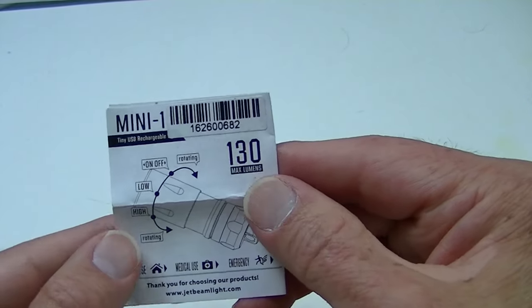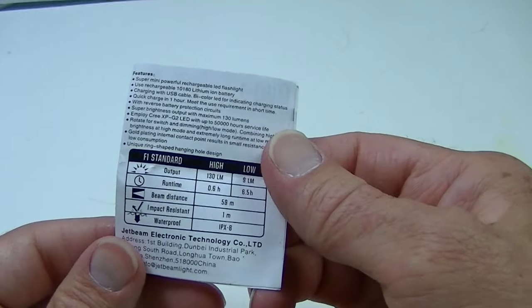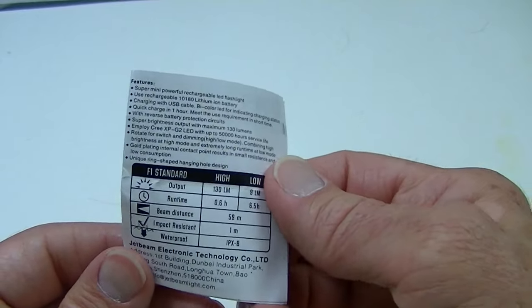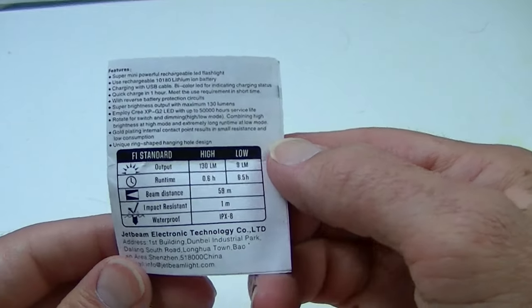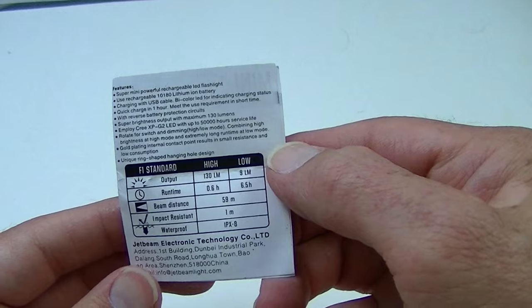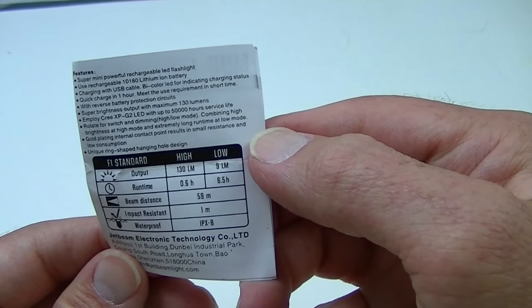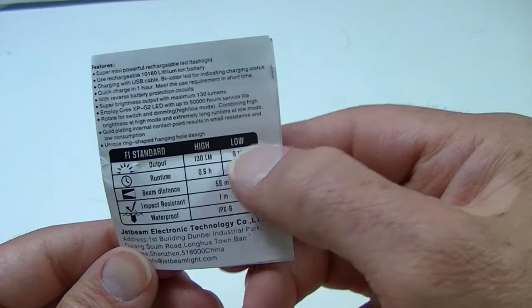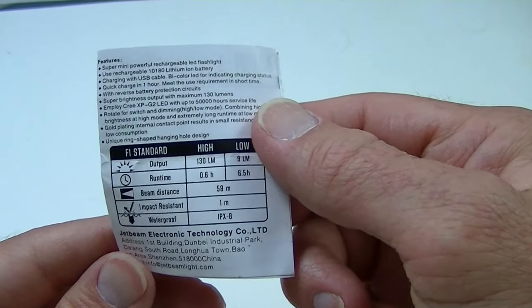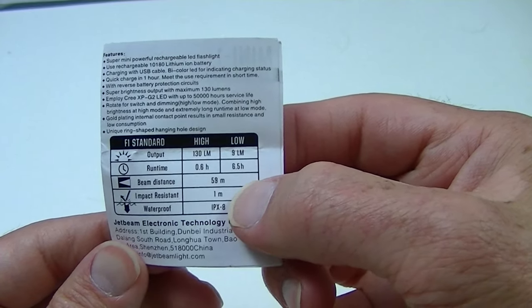It does not come with a mini USB, but nowadays they are available in lots of different places. Here are the particulars: 130 lumens on high, nine lumens on low, and 0.6 of an hour is the runtime on high. Beam distance is 59 meters.